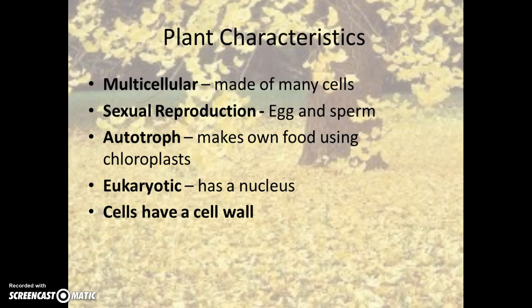A characteristic shared with all kingdoms but one is that they are eukaryotic. A plant cell has to be eukaryotic, which means it has a nucleus, and every cell that makes up a plant has a nucleus in it. The last characteristic of the plant kingdom is that plant cells have a cell wall — a rigid outer covering that allows the plant to stand up.